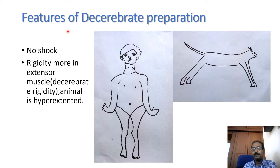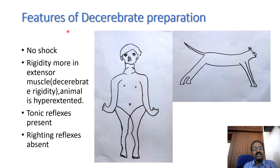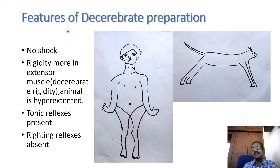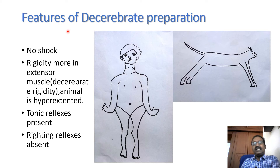The animal is hyperextended. Tonic reflexes are present, mainly the tonic neck reflex and tonic labyrinthine reflex. Righting reflexes are absent in the decerebrate preparation because the mid-brain is also not intact.